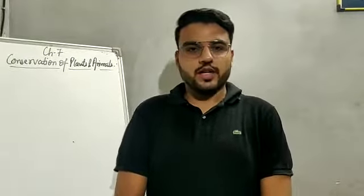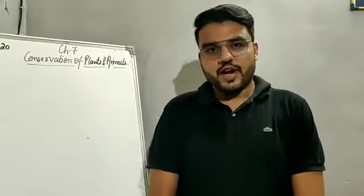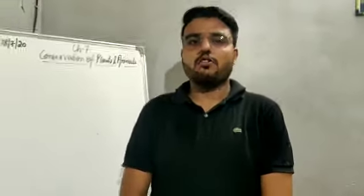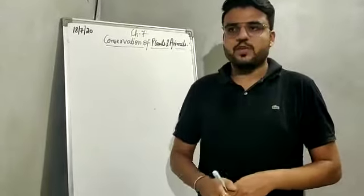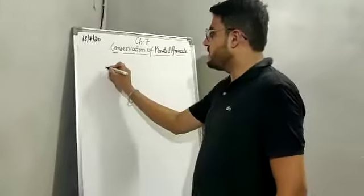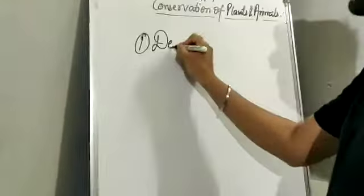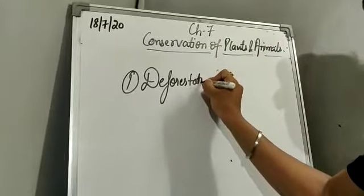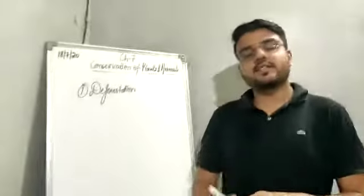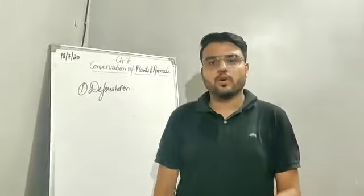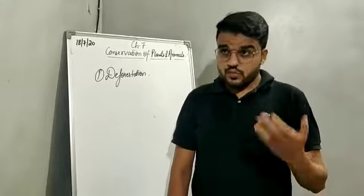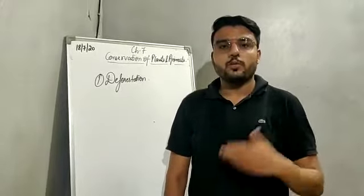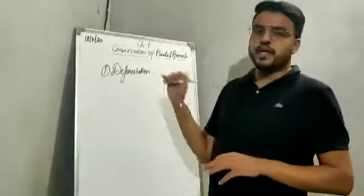A very good morning to all of you, my dear children. Today in biology class we will revise chapter number 7, conservation of plants and animals. We will have a quick revision of the chapter, starting with the first topic: deforestation. Deforestation is the process of cutting and clearing the forest for human needs, to fulfill human demands.